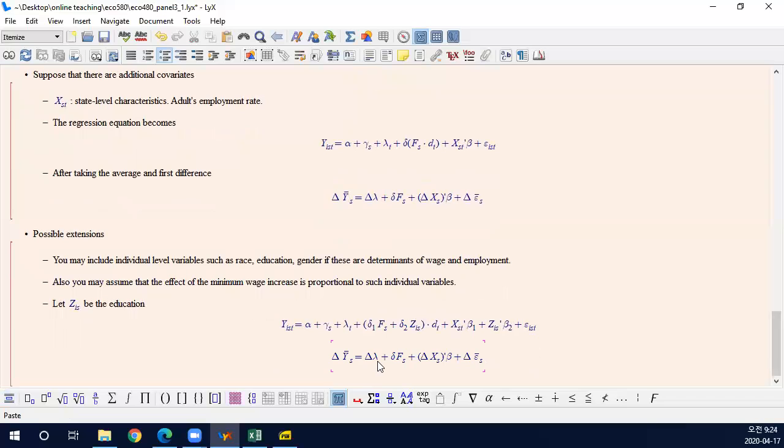And then after taking the difference and first difference, you are going to have not only Delta F, but something like this. So you may have this. And if Z does not depend on T, it will be canceled out by first difference. So you will end up with something like this, and you are going to see a better way to estimate, another channel that affects the wage or employment from the minimum wage increase. So it will be more interesting and more compelling result. Okay, this is it. It was a short video. Thank you for watching the video.